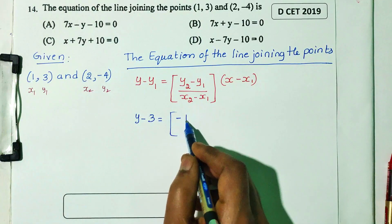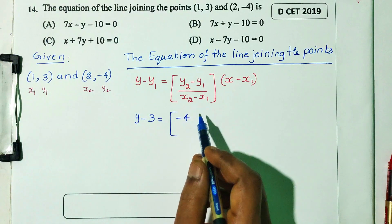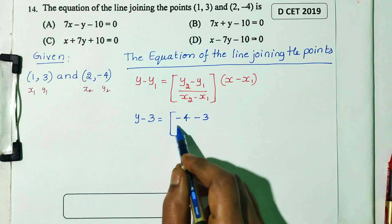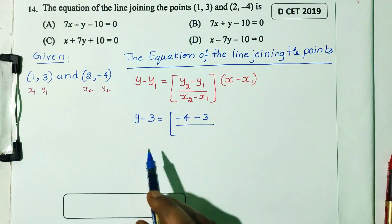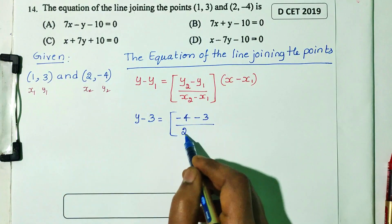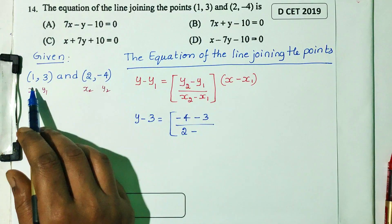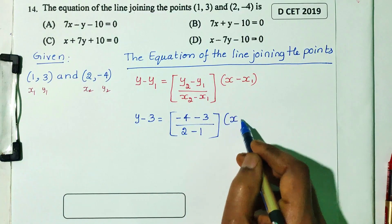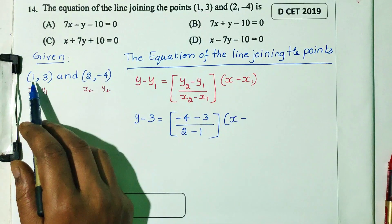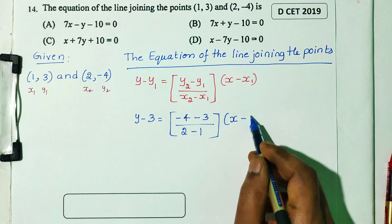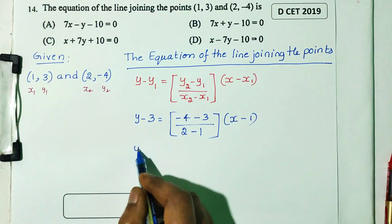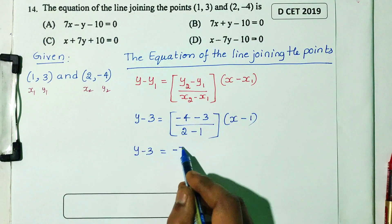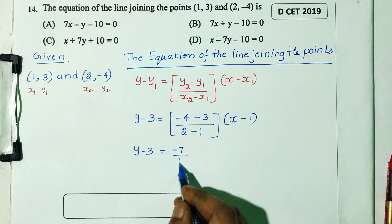Substituting: y minus 3 equals (minus 4 minus 3) divided by (2 minus 1), into x minus 1. That simplifies to y minus 3 equals minus 7 divided by 1, into x minus 1.